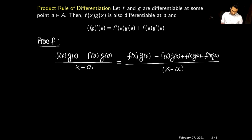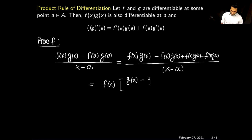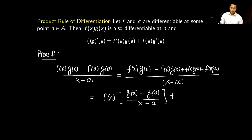Now I will do some algebra and rewrite this expression. I will pull out the values of f(x), and this becomes f(x) times [g(x) minus g(a)] divided by (x minus a). Then from the second term I will pull out g(a) and write the rest as f(x) minus f(a), divided by x minus a.